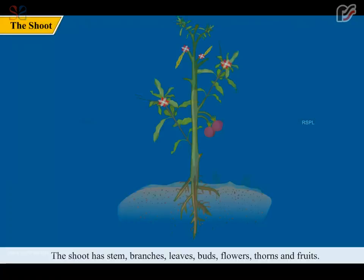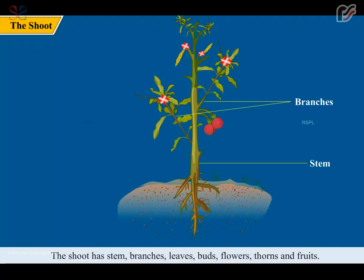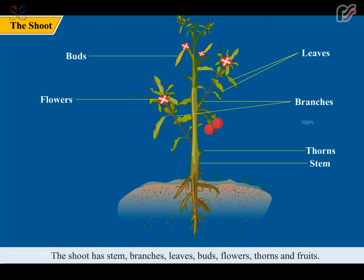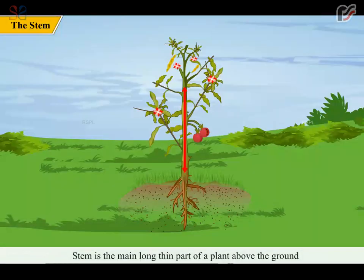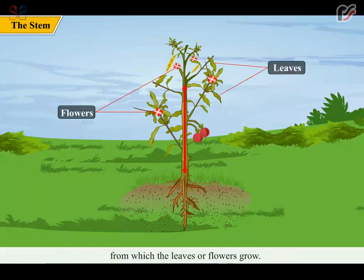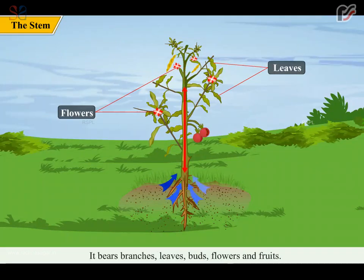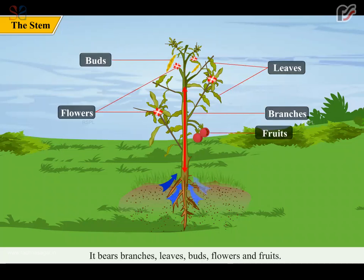The shoot has stem, branches, leaves, buds, flowers, thorns and fruits. The stem is the main long thin part of a plant above the ground from which the leaves or flowers grow. It holds the plant upright and bears branches, leaves, buds, flowers and fruits.